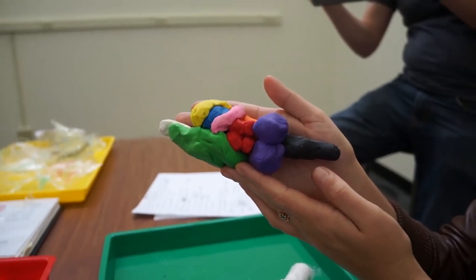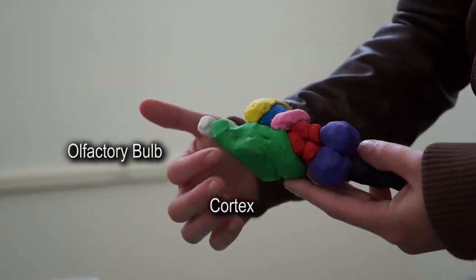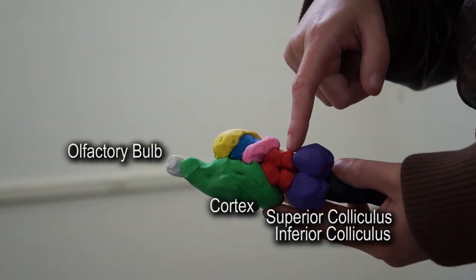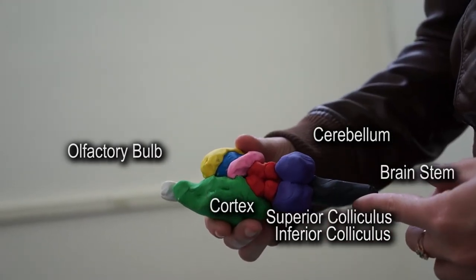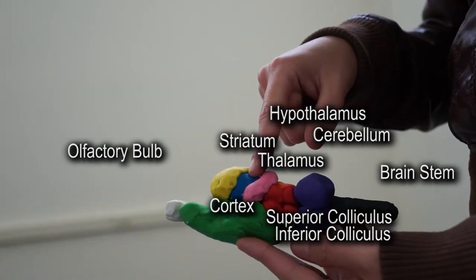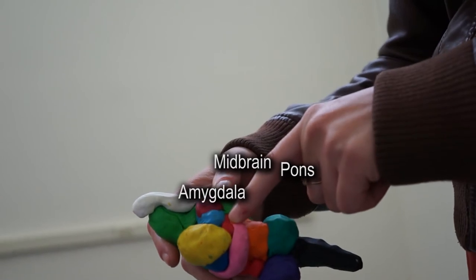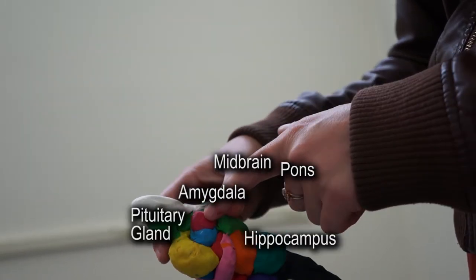So could you go through and tell me what all those different parts are with your fingers? Cortex. Superior colliculum. Inferior colliculum. Cerebellum. Brainstem. Hypothalamus. Striatum. Thalamus. Pons. Midbrain. Amygdala. This red thing connecting to the hypothalamus, pituitary gland.